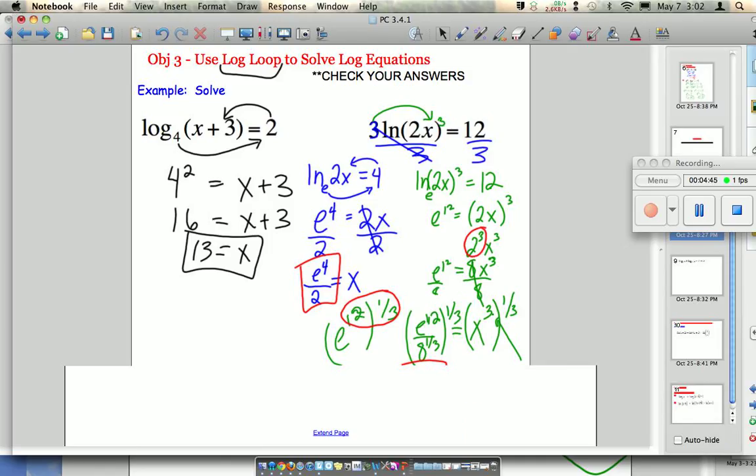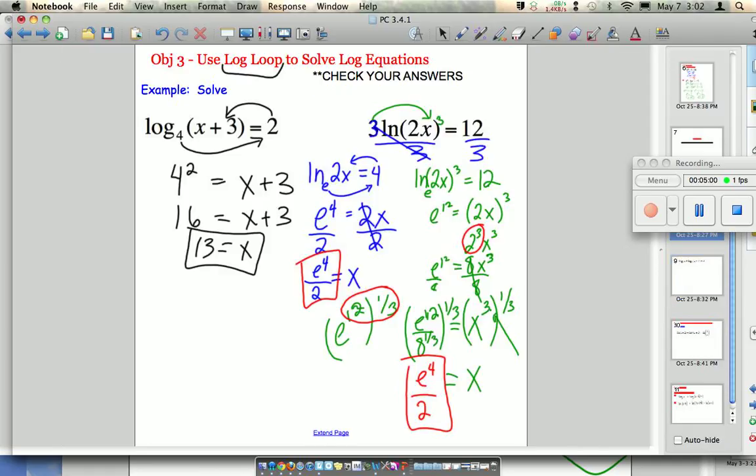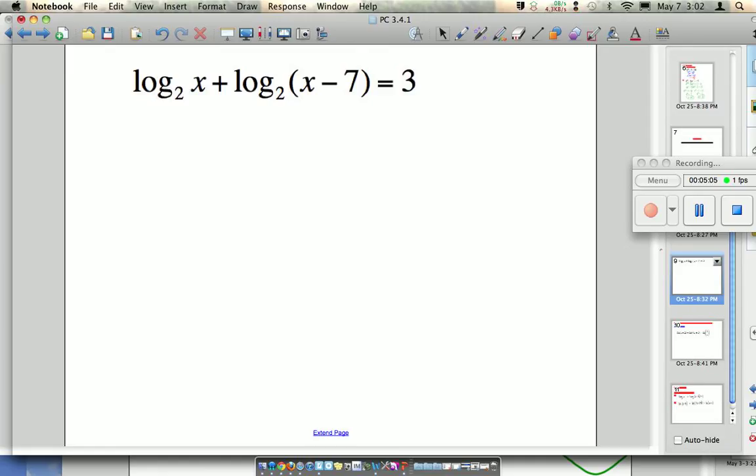Let's take a look at the next example. We do not have quite as simple of an expression. We have two different logs, but thankfully they're the same base, and they're equal to 3. In order to do what we did in the previous one, we need a single log. Then we can undo it by turning it into exponential form. Since this is plus, that means I take it into a single log by making it a product of x times x minus 7. I use the product property.